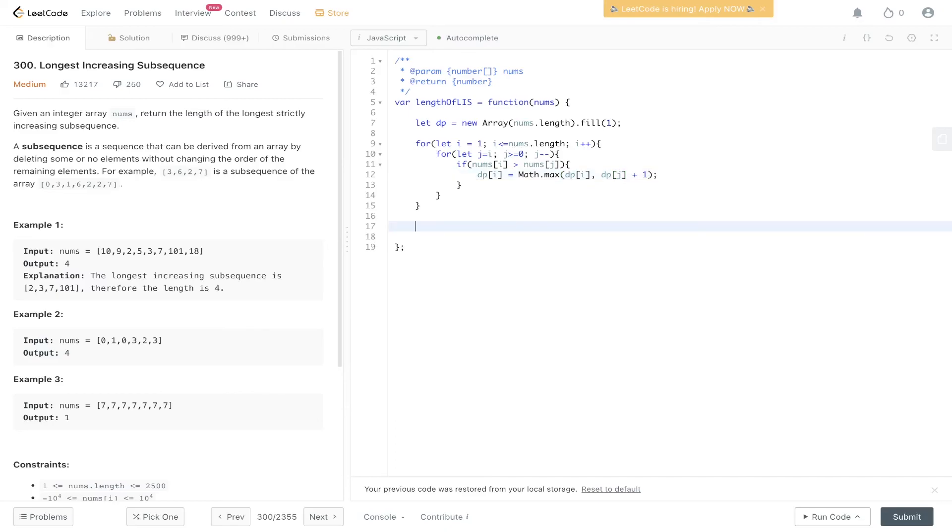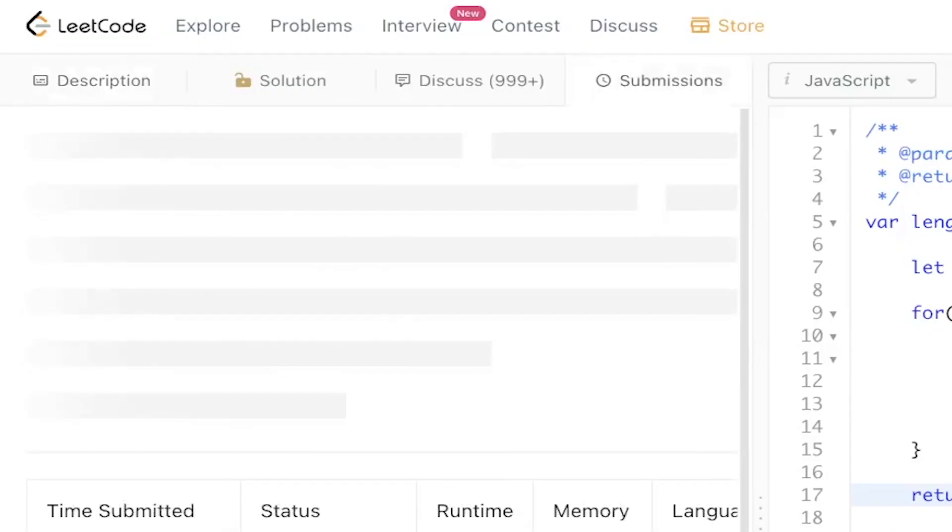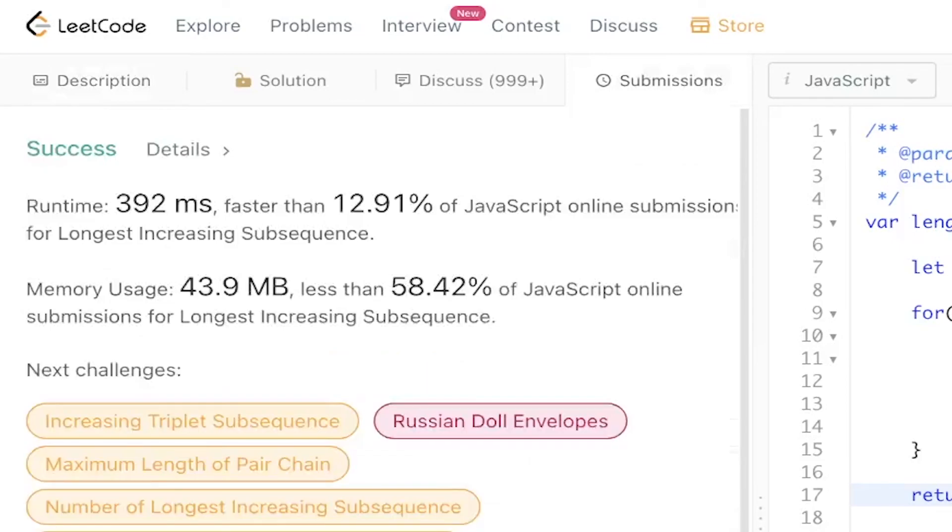A quick way to loop through the values and find the maximum is to just use the spread operator. So math.max and spread out the DP. Let's give this a run. And there you go.